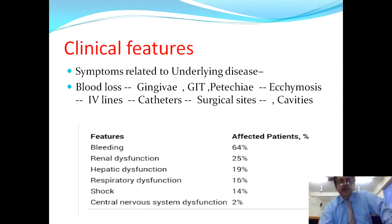Looking at the percentage of features in chronic DIC: bleeding occurs in 64% of cases, renal dysfunction in 25%, hepatic dysfunction in 19%, respiratory system involvement in 16%, shock in 14%, and CNS involvement in about 2% of patients.